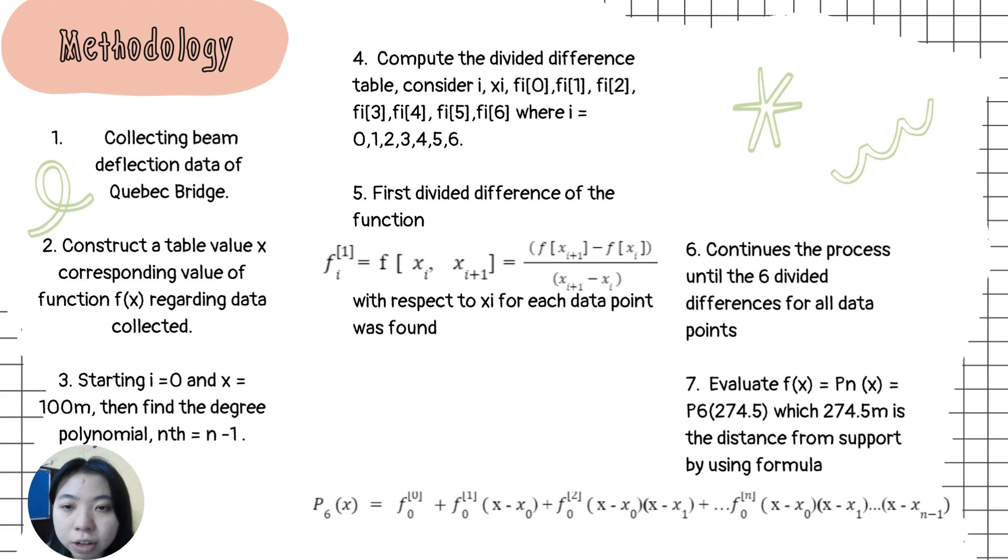For methodology, first, collecting beam deflection data of Quebec bridge. Second, construct a table value x corresponding value of function f(x) regarding data collected. Third, starting i equal to 0 and x equal to 100 meters. Then find the degree of polynomial by using this formula.